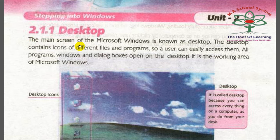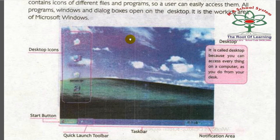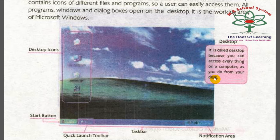The main screen of Microsoft Windows is known as the desktop. It is called desktop because you can access everything on the computer from it, just as you do from your office desktop.